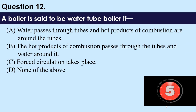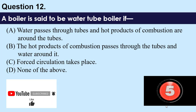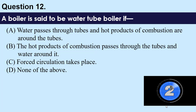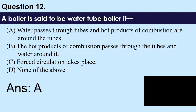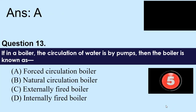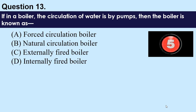Question number 12: A boiler is said to be a water tube boiler if — A) water passes through tubes and hot products of combustion are around the tubes, B) hot products of combustion pass through the tubes and water is around them, C) force circulation takes place, D) none of these. The answer is A — water passes through tubes and hot products of combustion are around the tubes.